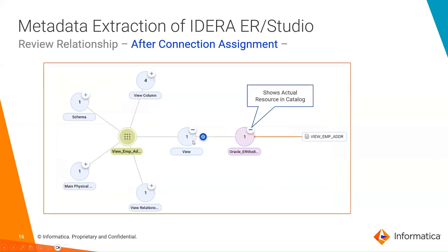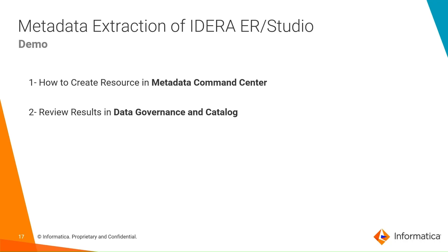After the connection assignment, this image shows the view of the relationship between the ER Studio Data Architect — for example, the view EMP Address asset — and the Oracle view after the connection assignment. On the right side, you can see the actual Oracle resource and the relationship between the logical model from the view to the actual resource on the database side. Now let's go to see the demo of this Metadata Command Center resource creation and how the data results are shown in the data governance catalog.